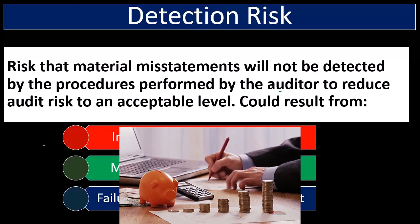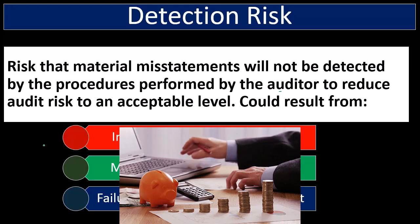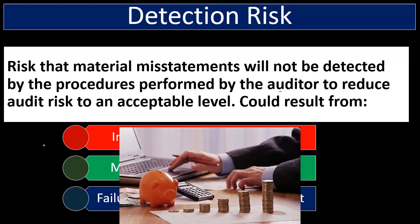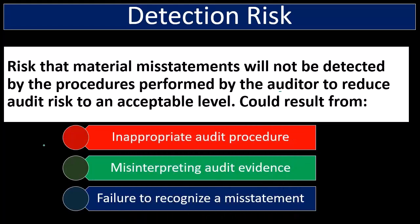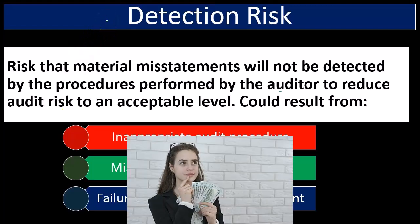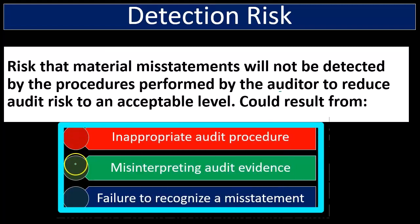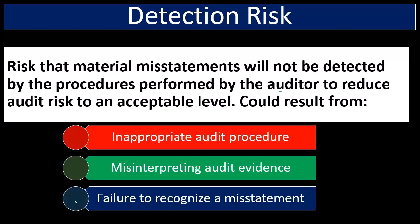Detection risk is the risk that our audit procedures do not detect a material misstatement. We are going to vary our detection risk based on the formula. It could result from inappropriately designed audit procedures, misinterpreting audit evidence — having the evidence but misinterpreting it — or simply failing to recognize a misstatement that was there.